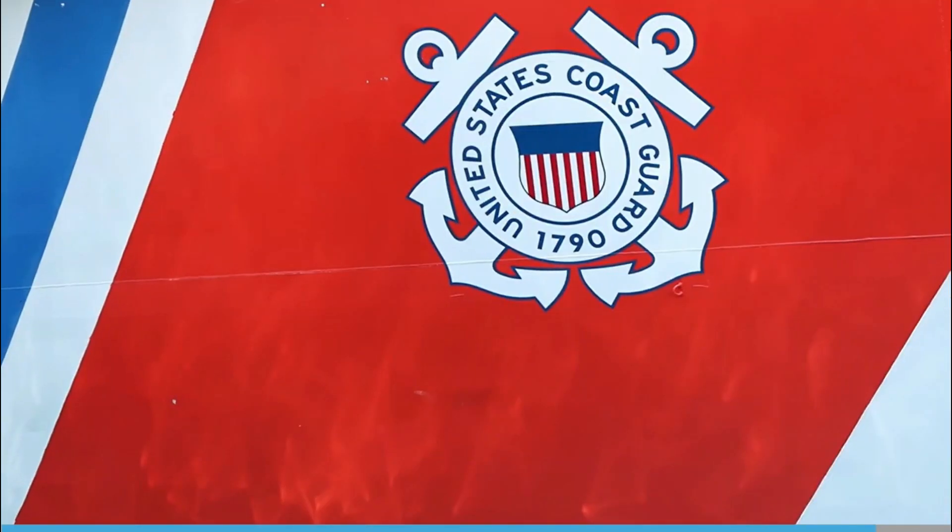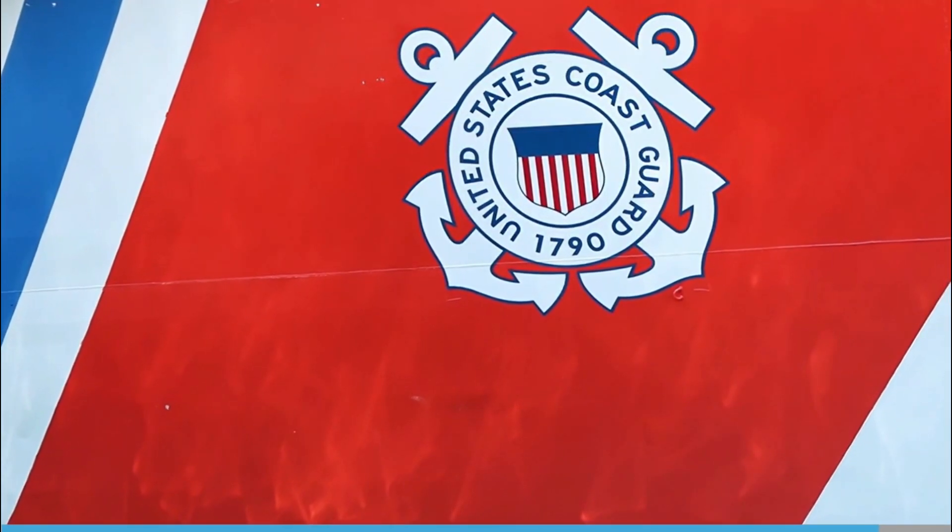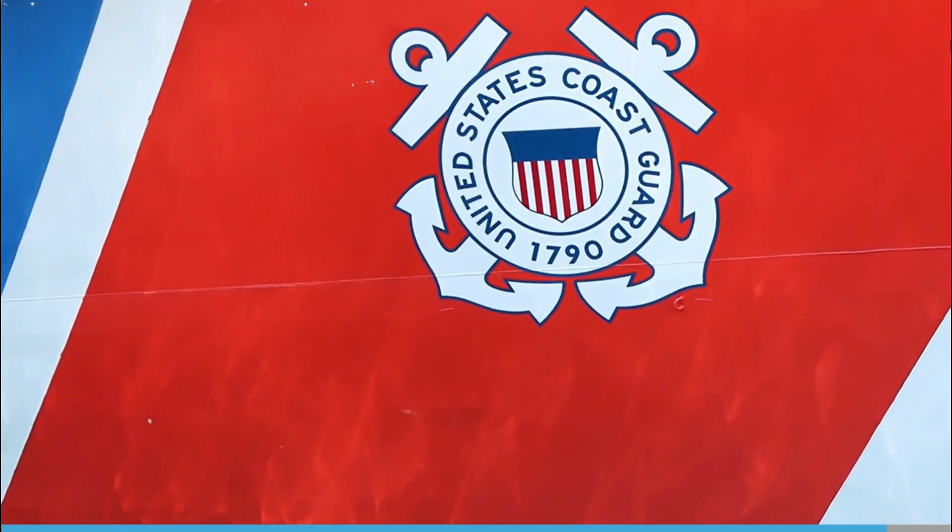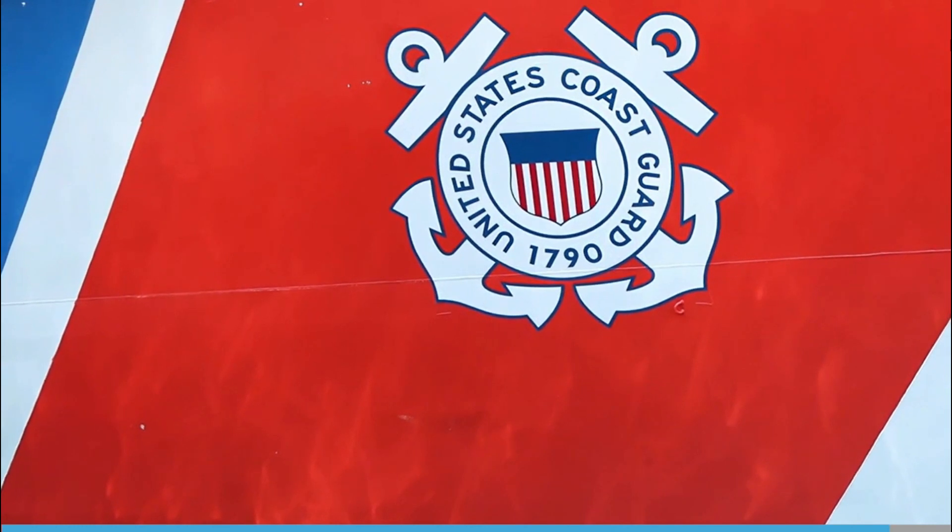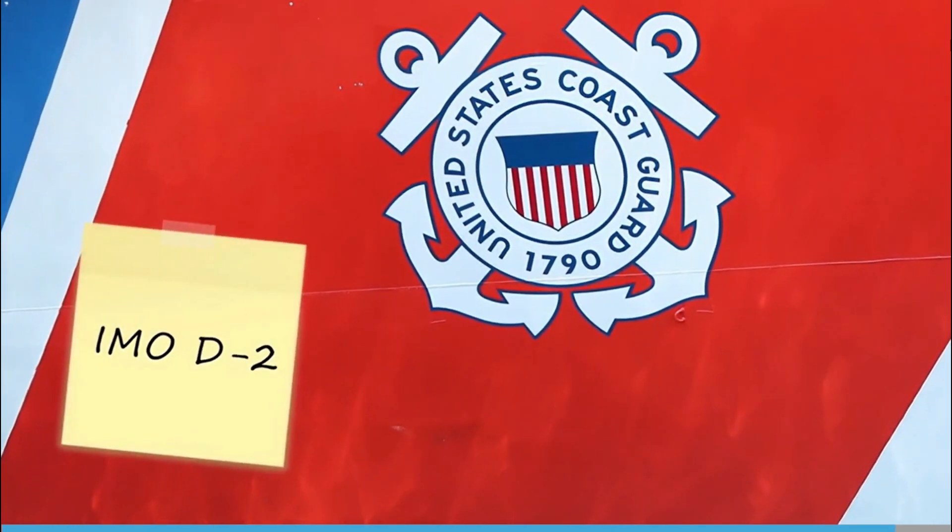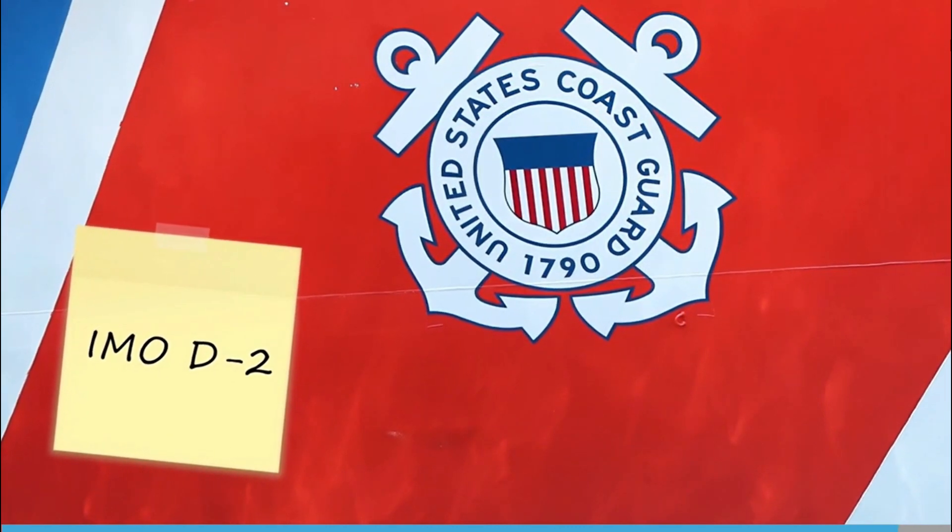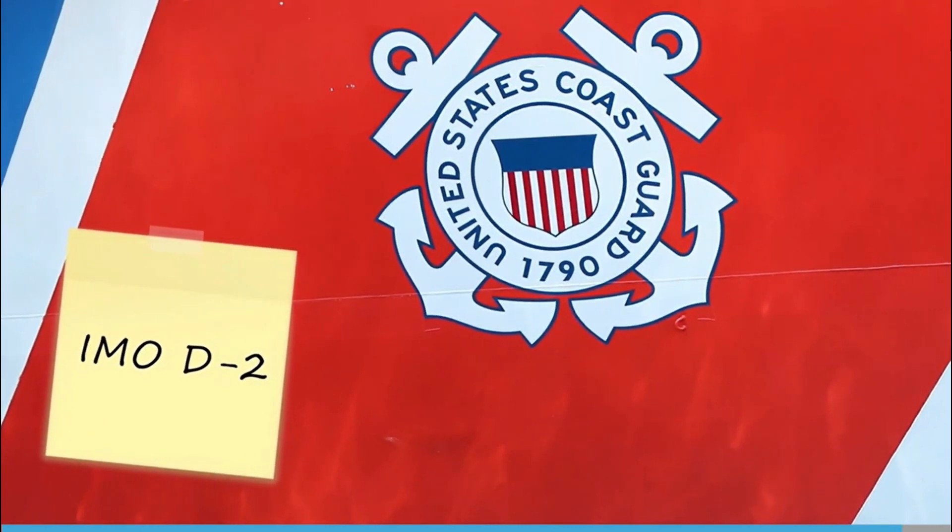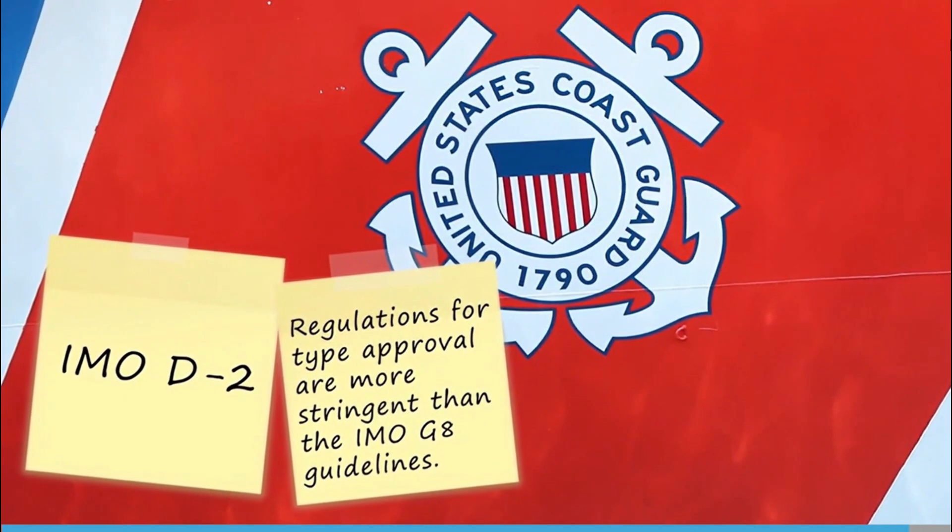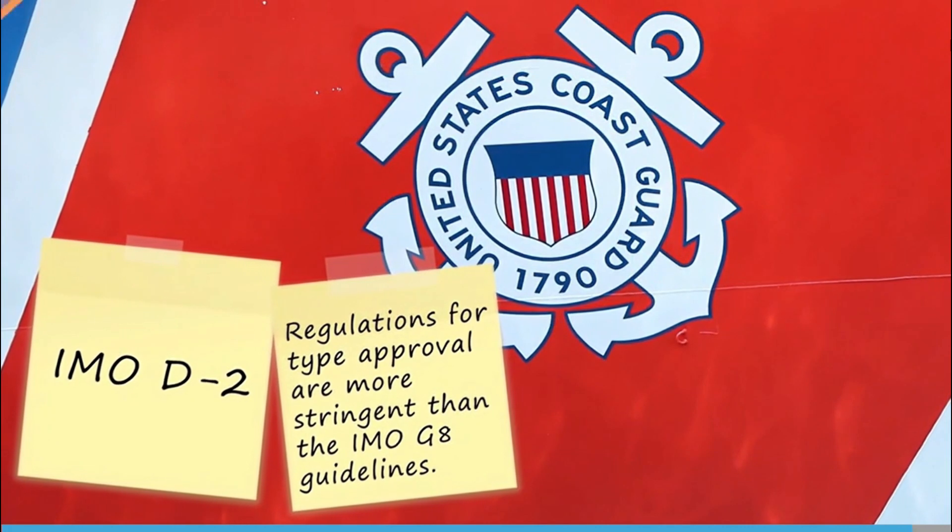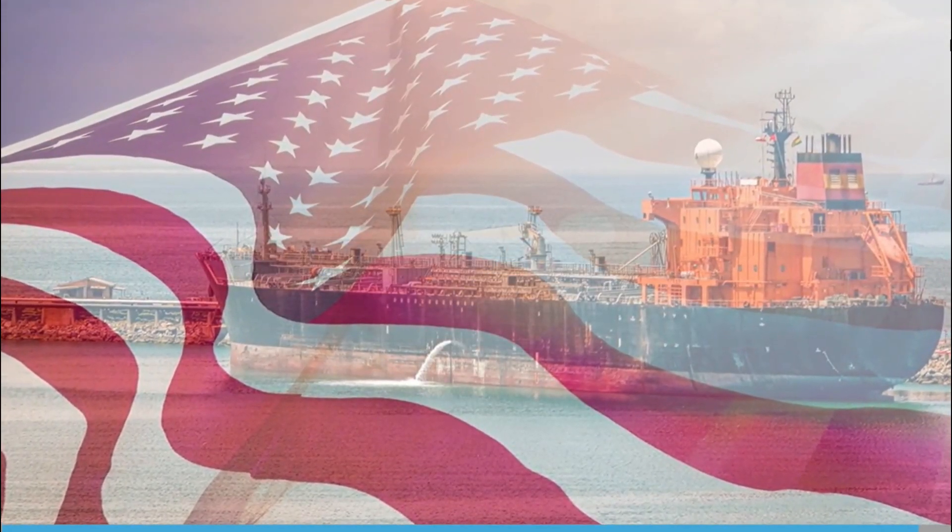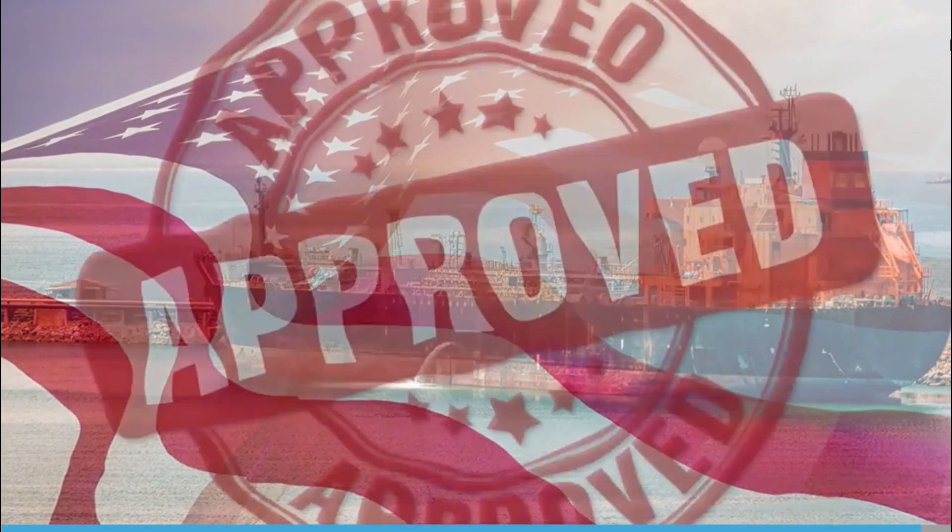The USCG has its own regulations for ballast water management and the United States has not yet adopted the ballast water management convention. The USCG discharge standard is similar to the IMO D2 performance standard for discharged ballast water. However, the regulations for type approval are more stringent than the IMO G8 guidelines. A ballast water management system used in ballast water discharge in U.S. waters must have USCG type approval.